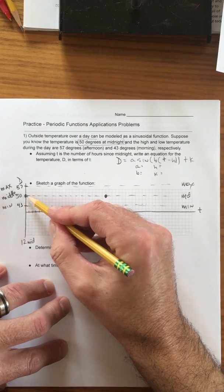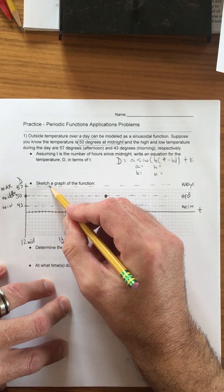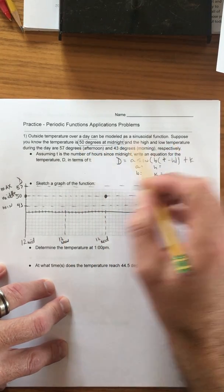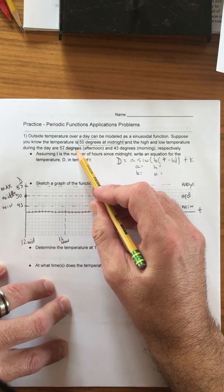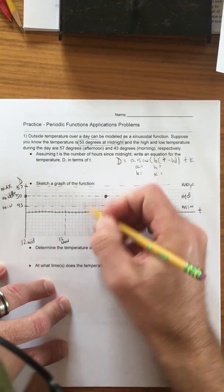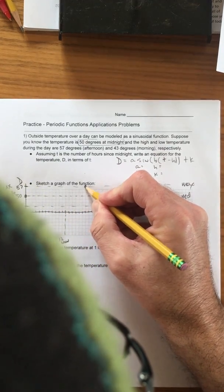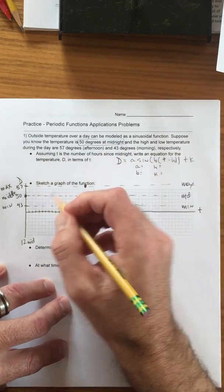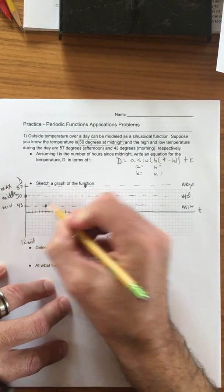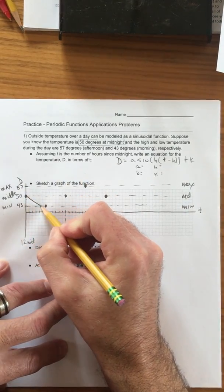What does it say? High and low temperature 57 in the afternoon. So the high of 57, 1, 2, 3, 4, 5, 6, we're gonna say is right there in the afternoon.